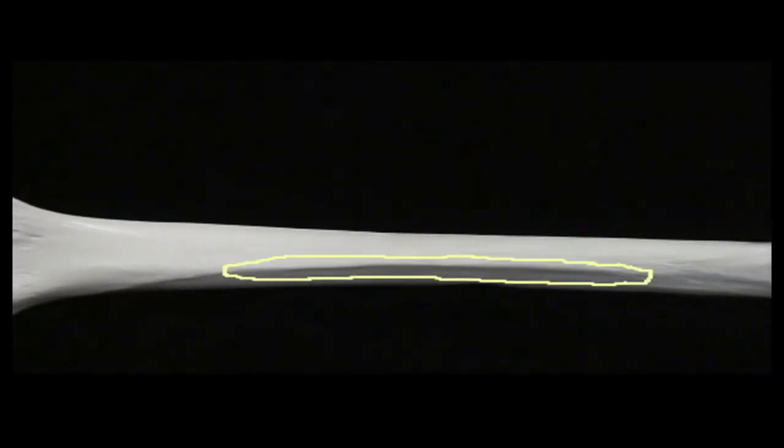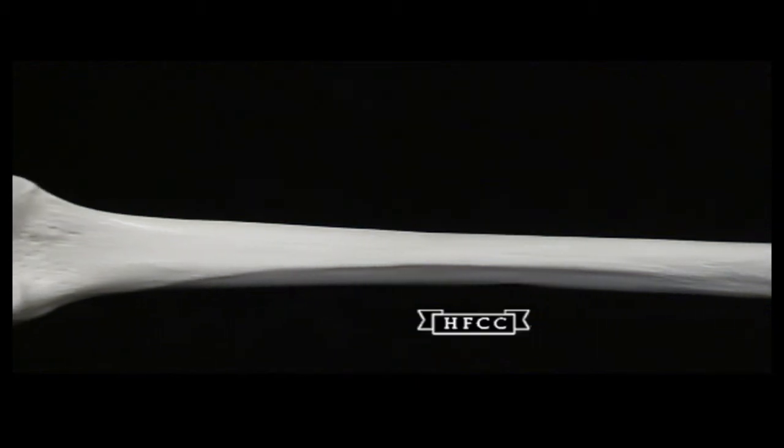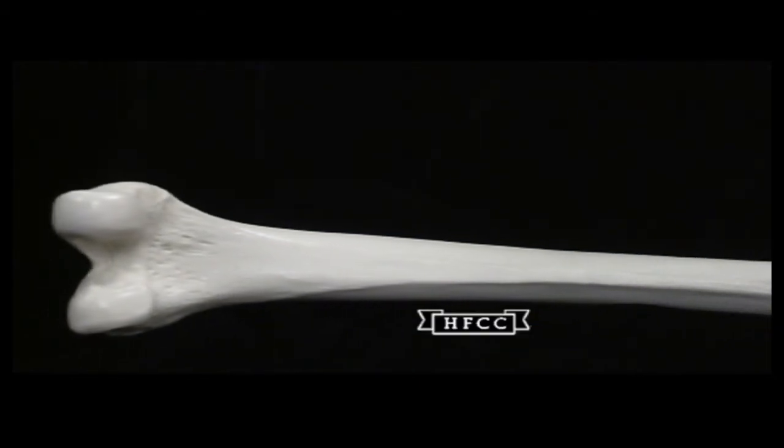When it continues down that I pause right here at, that ridge is called the linea aspera. The proximal one-third was a gluteal tuberosity. The other two-thirds of the ridge is the linea aspera.